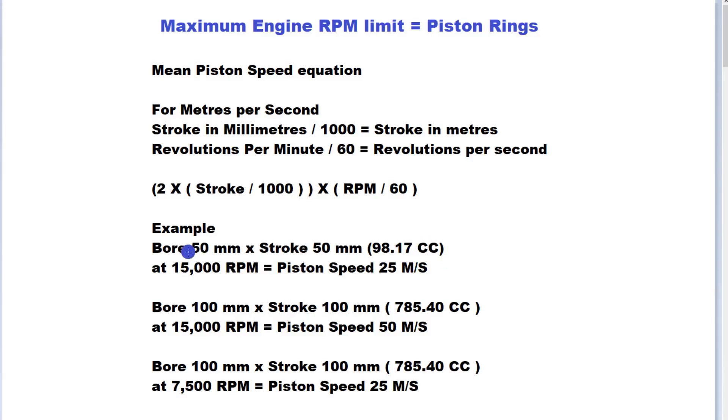As you can see, in a bore of 50 millimeters we'll have a piston ring that's a certain size and weight. Double the size bore will have double the size piston ring which will be about double the weight. What occurs when we go beyond the limitations of our piston ring is that the piston ring is the ultimate maximum RPM limit.